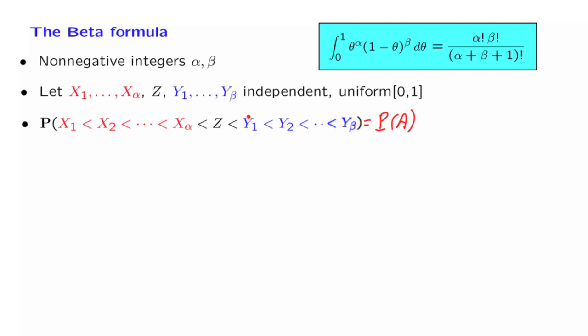Now this probability is not hard to calculate. We have alpha plus beta plus 1 random variables, independent, identically distributed. By symmetry, any particular way of ordering these random variables is equally likely. How many ways are there to order alpha plus beta plus 1 random variables? It's the factorial of the number of items. We're talking about the probability of a particular permutation. So this probability is equal to 1 over the number of permutations of alpha plus beta plus 1 objects.